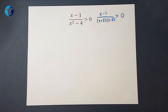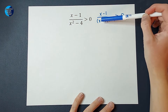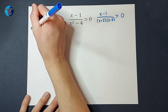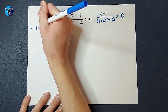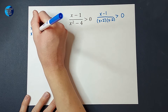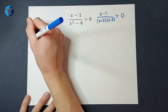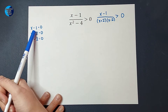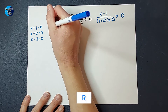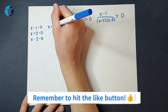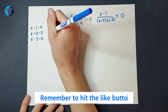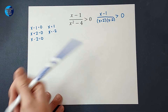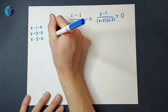The next thing I'm going to do is set each of these equal to zero. So I'm going to set x minus one equal to zero, x plus two equal to zero, and x minus two equal to zero. I add one to both sides to get x equals one, subtract two from both sides to get x equals negative two, and add two to both sides to get x equals two.